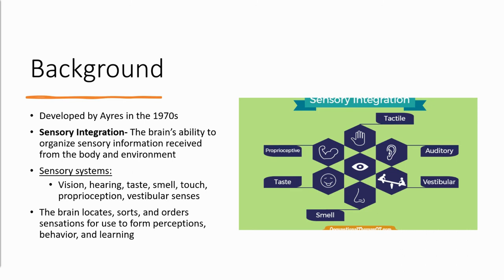Sensory integration theory was developed by Jean Ayres in the 1970s. Sensory integration is defined as the brain's ability to organize sensory information received from the body and the environment. It's important to note that this is the first theory of the sensory systems, and because it was developed so early, there is limited research on it — it branched into different schools of thought with different researchers. So this one is not super evidence-based, but it essentially describes the brain's ability to organize sensory information received from the body and environment.